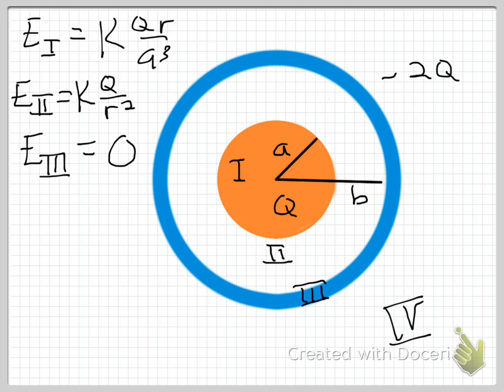So, inside the conducting spherical shell, we don't even have to apply Gauss's Law. We get that the E field inside is identically zero.